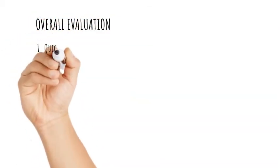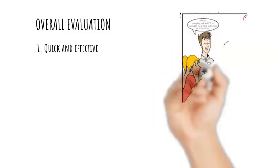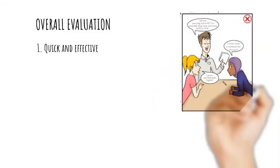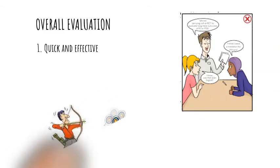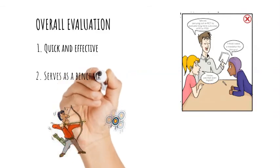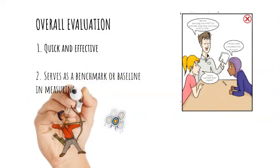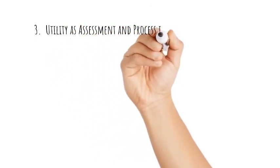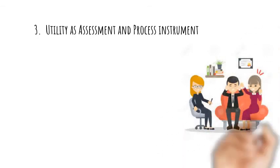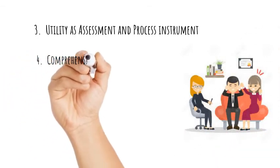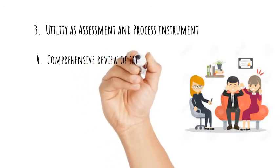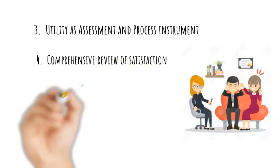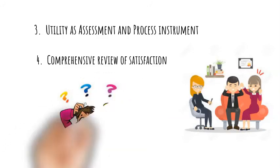Ultimately, the Dyadic Adjustment Scale can provide therapists with a quick and effective means for analyzing and structuring a couple's issues into meaningful therapeutic goals. Not only can increased efficiency in diagnosis and goal setting be expected, but the scale might also serve as a benchmark or baseline to measure client change and therapeutic effectiveness. When used both as an assessment and process instrument for structuring marital therapy, couples who complete therapy would have processed a comprehensive review of satisfaction, consensus, cohesion, and affectional expression issues.